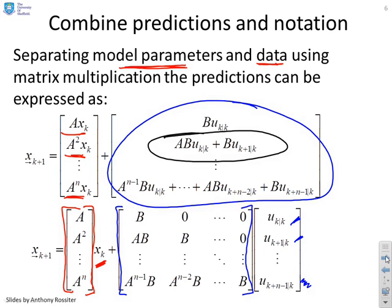You'll see I've got A, B times uk. So there's A, B here times the first element in the vector. And then I've got B uk plus 1. So there's the B and that multiplies on that.